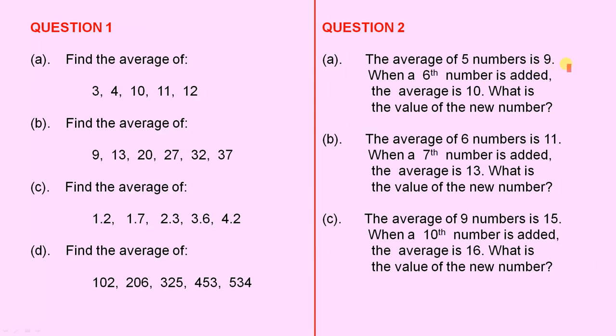Question 2, Part A: The average of 5 numbers is 9. When a 6th number is added, the average is 10. What is the value of the new number?